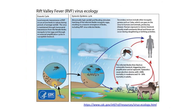Rift Valley Fever virus is transmitted mainly by mosquitoes, particularly the Aedes and Culex species. The virus transmits vertically from the mosquitoes to the eggs and can remain viable for years. Mosquitoes lay eggs in water to hatch, and that's why rain and water increase the spread of disease.